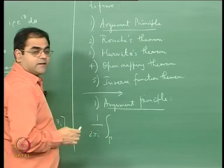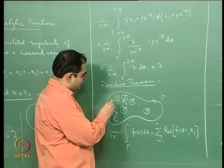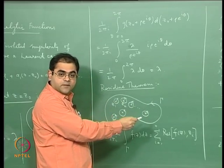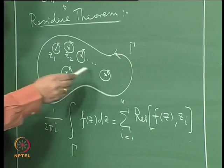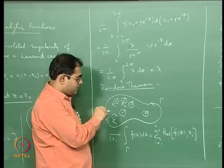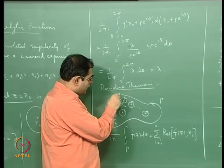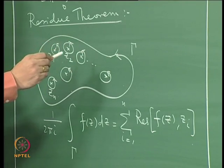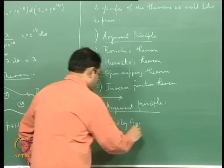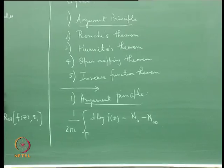The argument principle tells you: if you have a function defined on a domain, analytic on a domain containing the whole region except at finitely many points in the interior which are only poles, and the function has no zeros on the boundary of the contour, then (1/2πi) times the integral over γ of d(log f(z)) — called the logarithmic integral — gives you the number of zeros minus the number of poles inside the region.